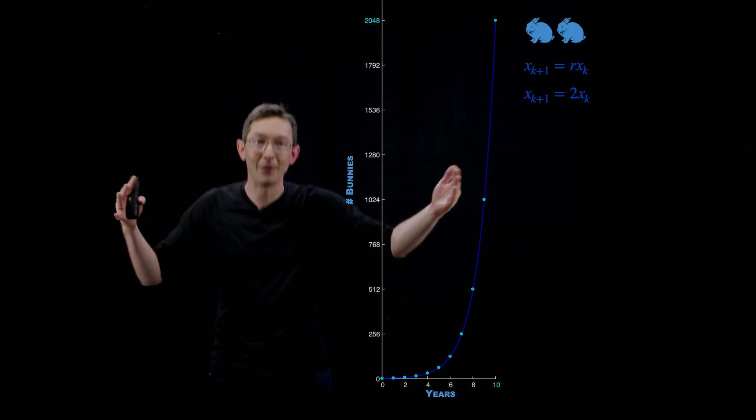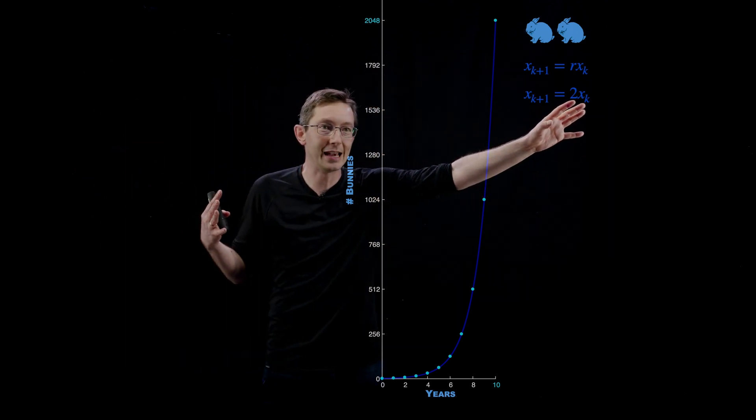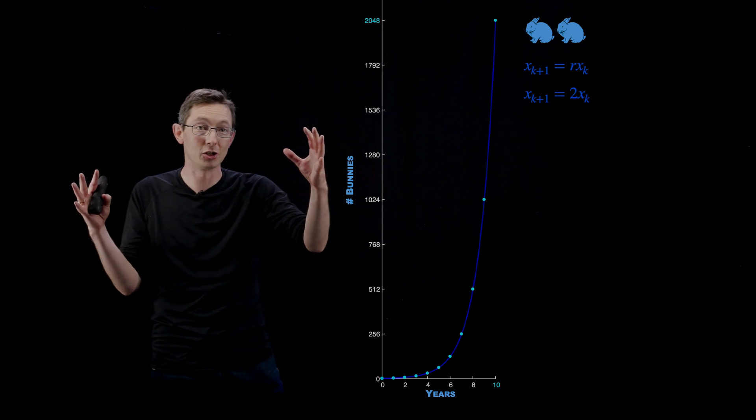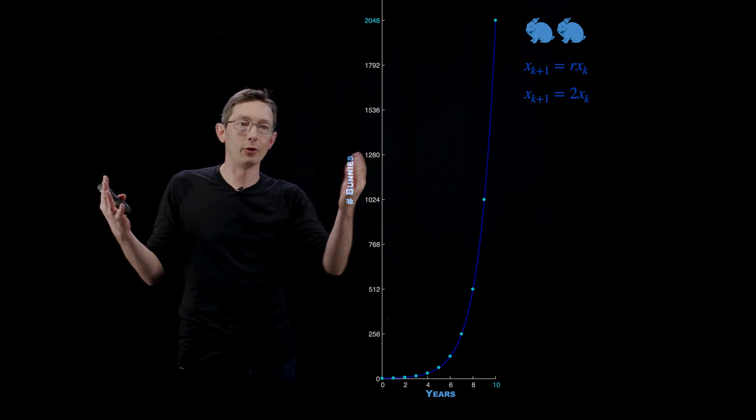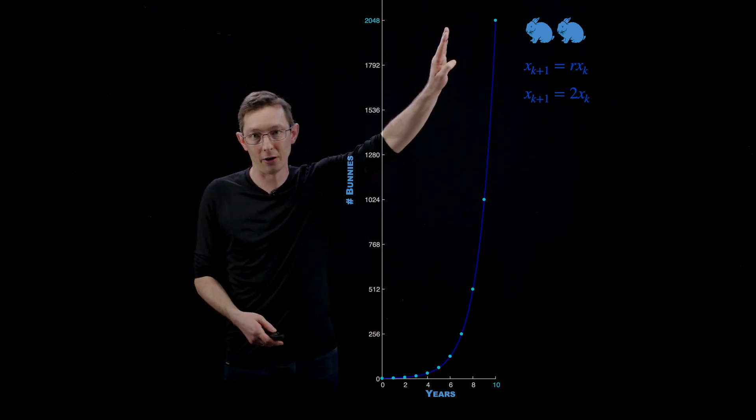But if a thousand bunnies double, I get a thousand more. And that's what this is saying is that the bigger my population is, the faster it's going to grow. And that's why you get this exponential growth.